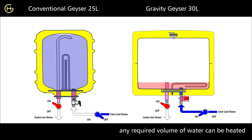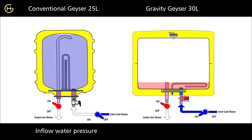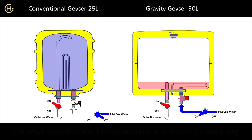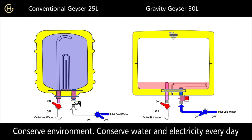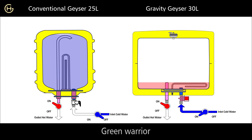In our gravity storage geyser, only the required volume of water can be filled and heated. In this case, dead storage is only 5 liters. A conventional storage geyser works on inflow water pressure, whereas our gravity storage geyser works on gravitational force. Be a part of global efforts to conserve the environment — conserve water and electricity every day and be a green warrior.